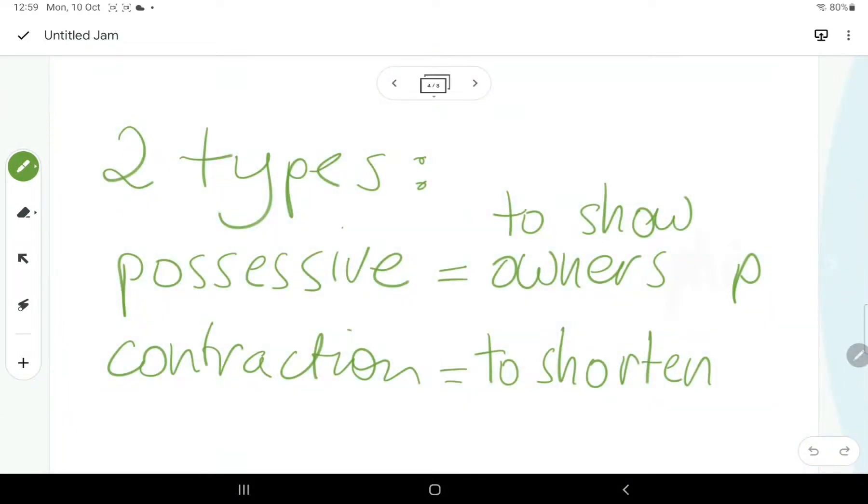First of all, there are two types of apostrophes. There's a possessive apostrophe, which is used to show that something is being owned by somebody. And the second use is for contraction, where we're trying to shorten two words, usually by joining them together.